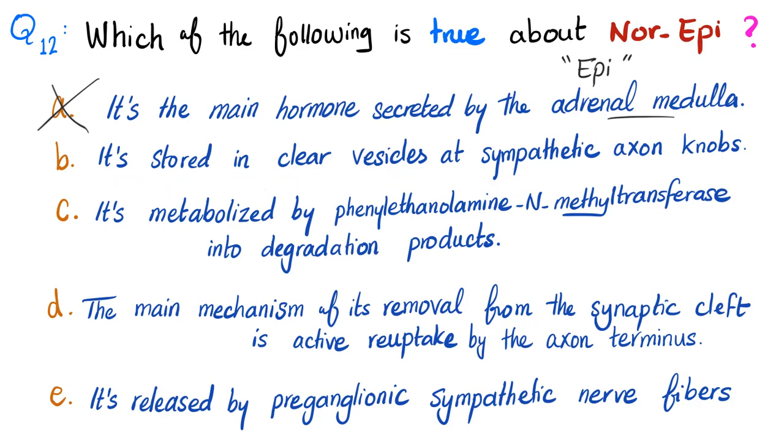Option B - it is stored in clear vesicles? No, acetylcholine is stored in clear vesicles, but norepinephrine is stored in granular vesicles.